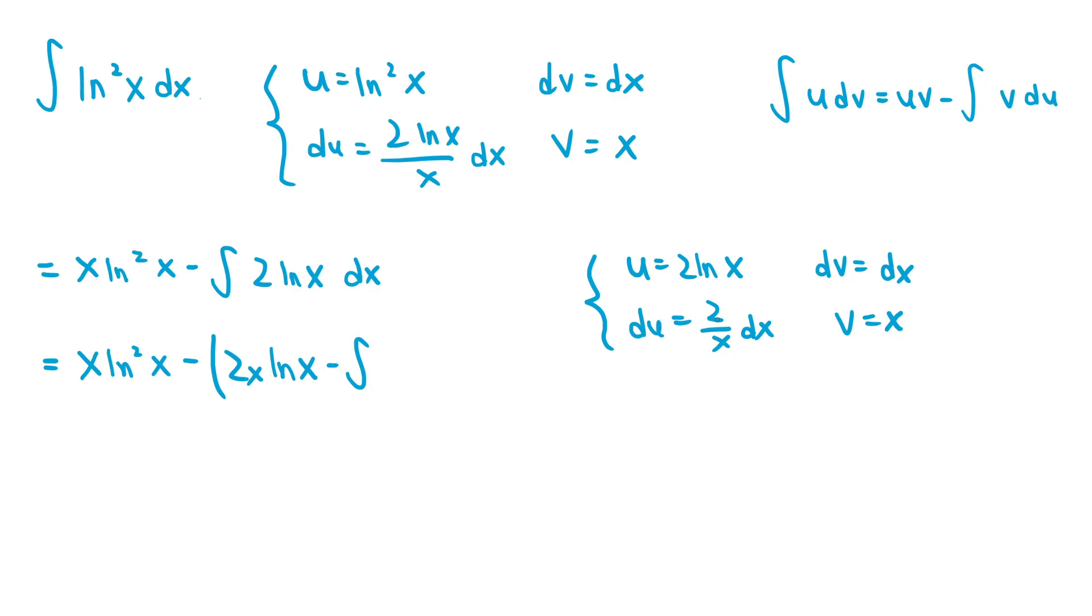v equals x and du equals 2 over x dx. So if we multiply the two expressions, it just becomes 2 dx. So this is minus the integral of 2 dx. If we distribute the negative sign into the parentheses, the last two terms become negative 2x ln x plus the integral of 2 dx.